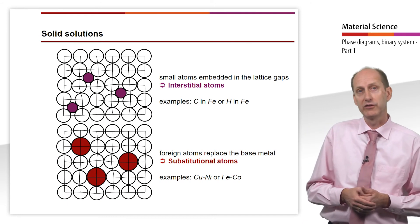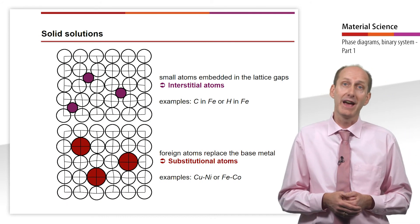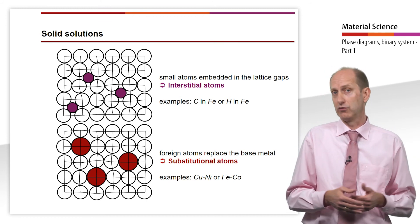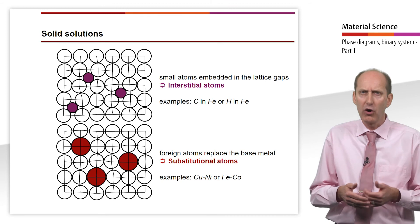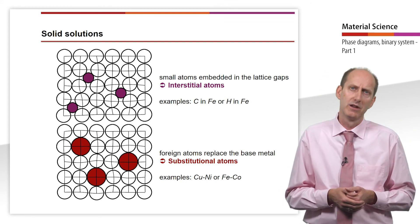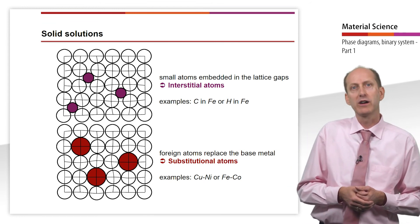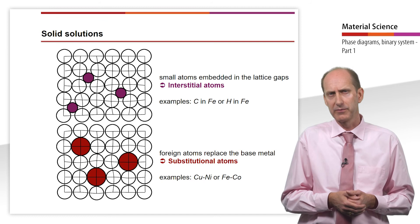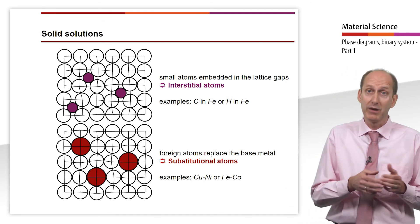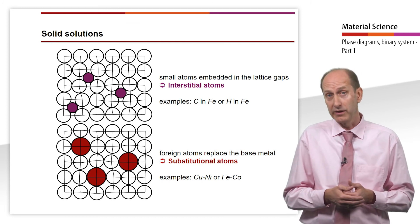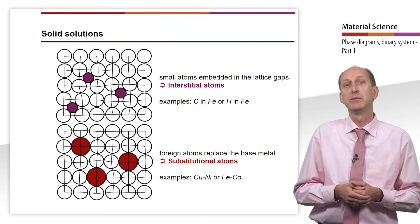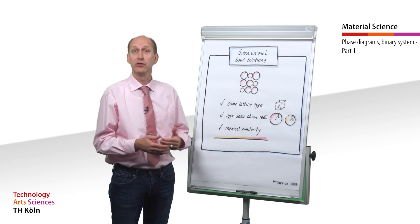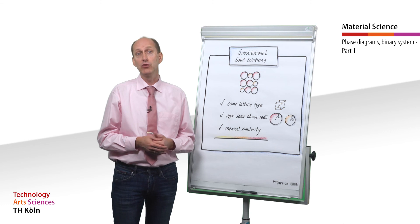When alloys form solid solutions in the solid state, the metal lattice contains atoms of both components. Two types of solid solutions can be distinguished. First, interstitial solid solutions. These are formed when small atoms are embedded in the lattice gaps of a metal. We already came across this when we talked about the zero-dimensional lattice defect, interstitial atoms.